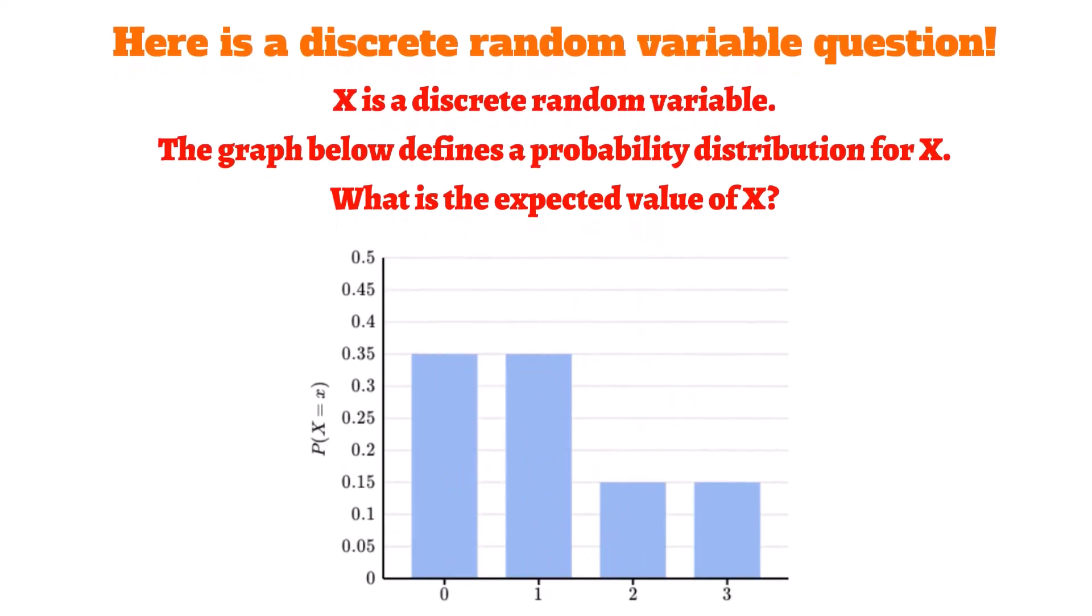Here is a discrete random variable question. X is a discrete random variable. The graph below defines the probability distribution for X. What is the expected value of X?